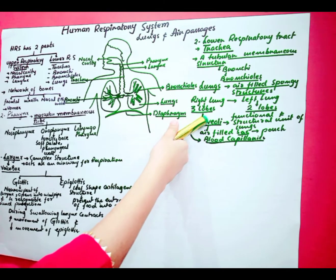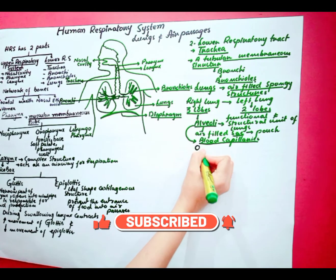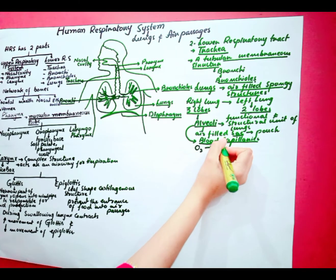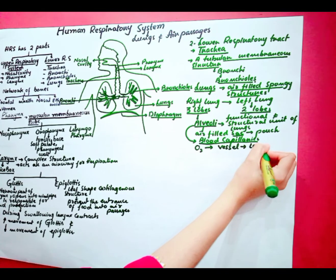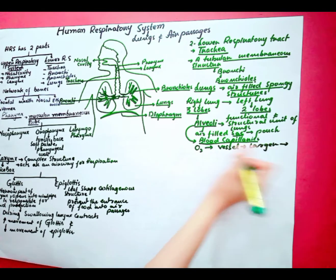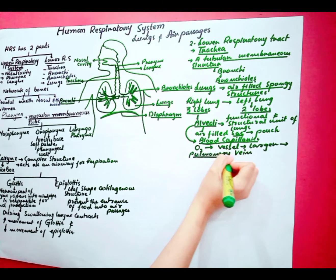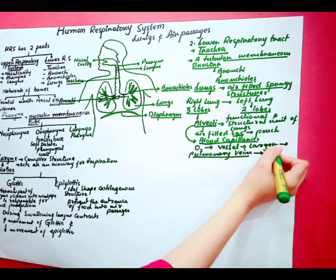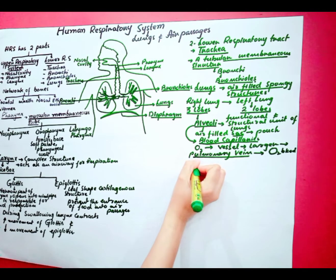These alveoli are surrounded by blood capillaries. As these alveoli are full of oxygen, the oxygen from alveoli is trapped by the blood capillary. And this vessel opens up into larger blood vessel which is called pulmonary vein. This pulmonary vein transfers the oxygenated blood to the left atrium of heart.